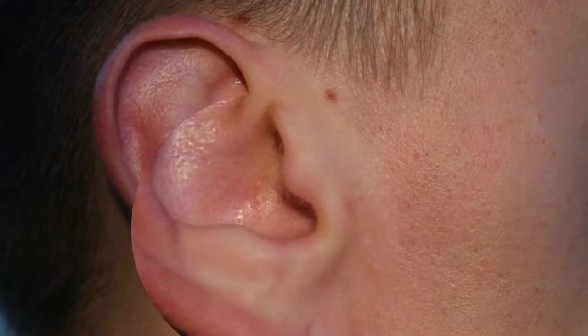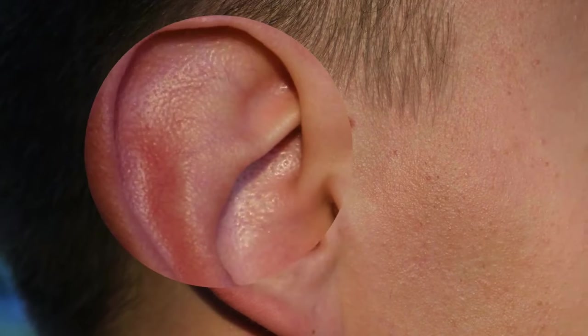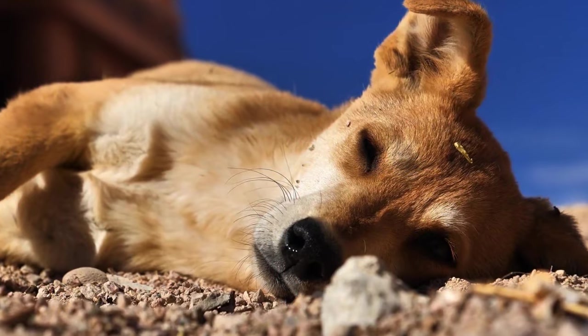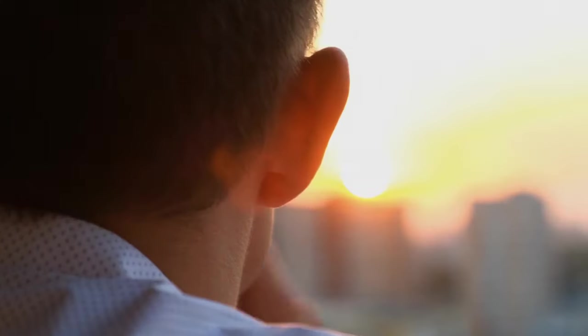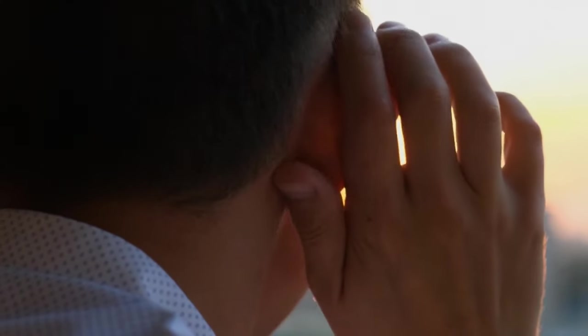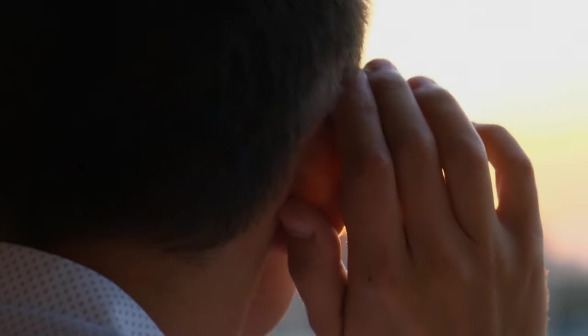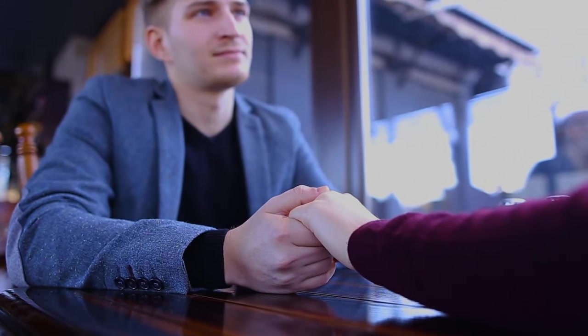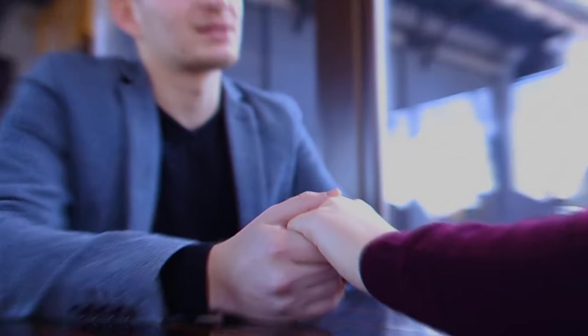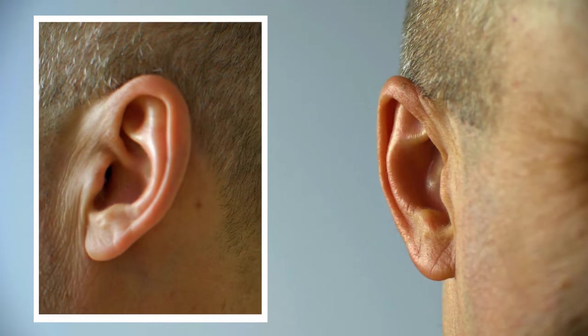Our ears, too, have vestigial muscles. They help animals hear better and express their feelings. But in humans, these ear muscles don't do much. We've figured out other ways to listen and show our emotions. Yet, some of us can still wiggle our ears with practice.